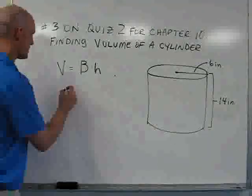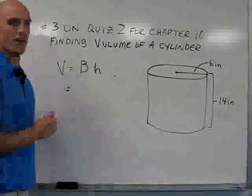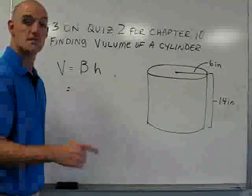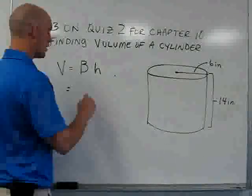In this case, we're going to solve for the area of the base, which is a circle, by multiplying pi times the radius squared.